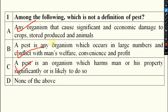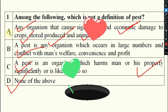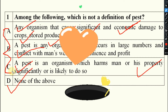The key terms are: economic damage or economic injury must be there, and it must be related to crop, stored produce, animals, or property. So all three given statements are definitions of pest. The question asks which is NOT a definition of pest — the answer is none of the above, because all three are definitions of pest.